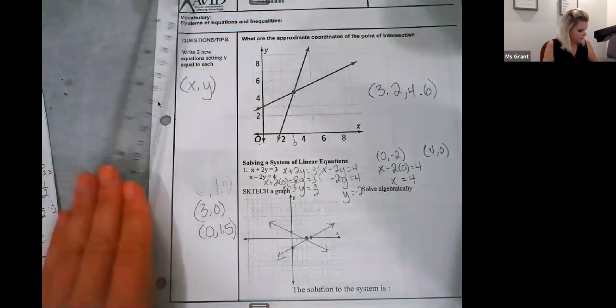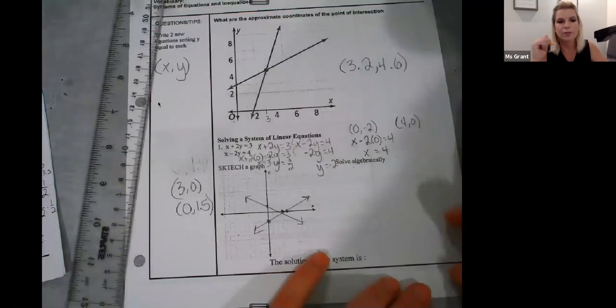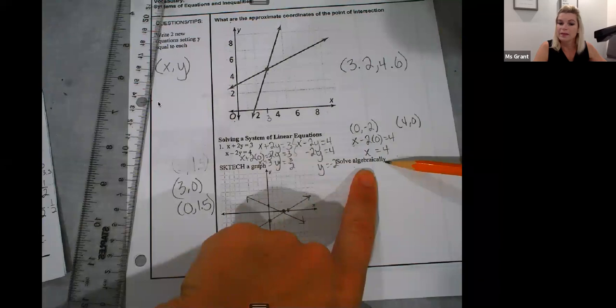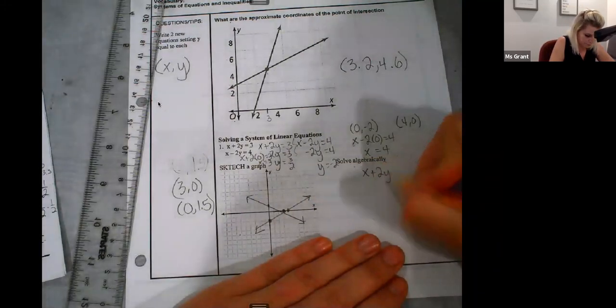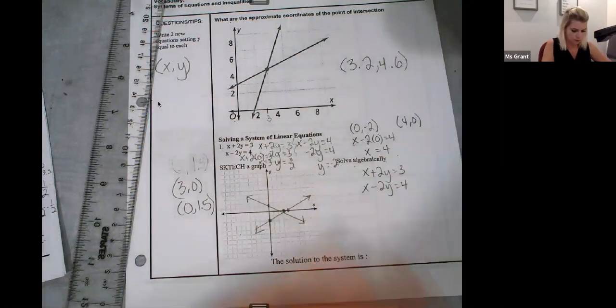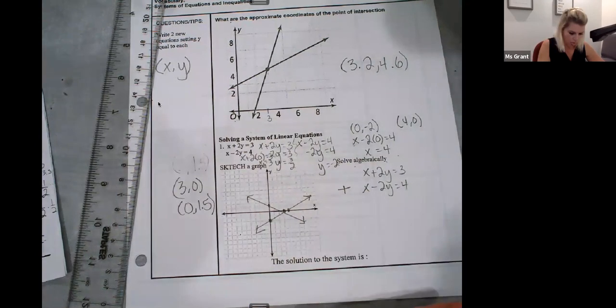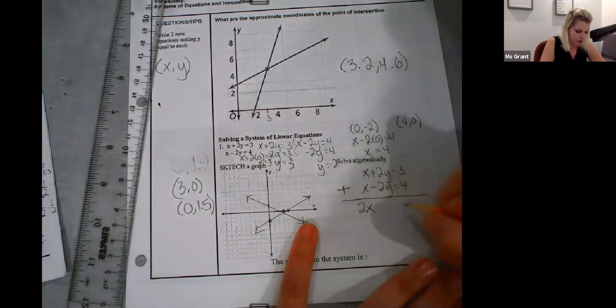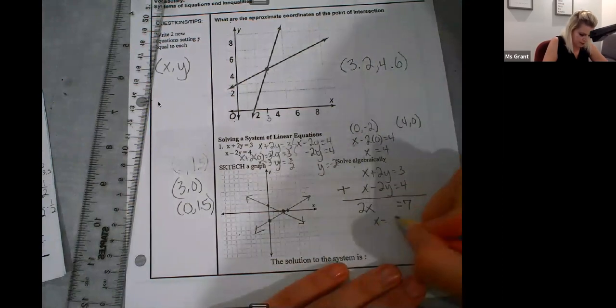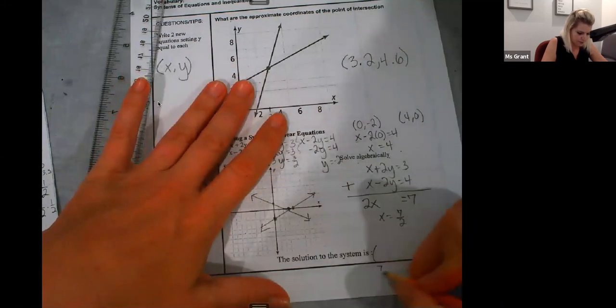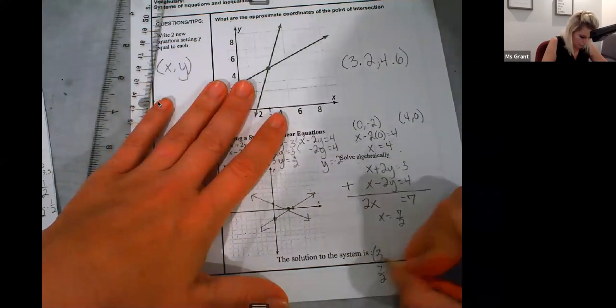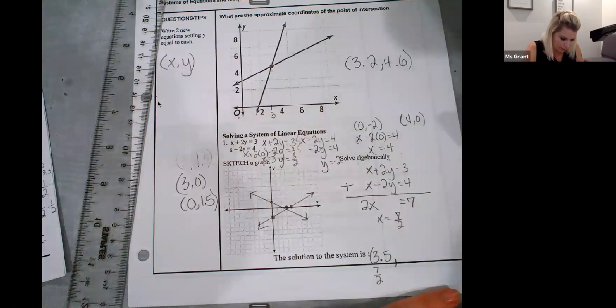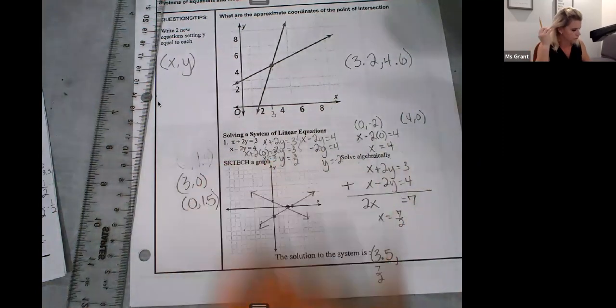So, this is graphing them. Solve algebraically. Solving algebraically with a system means that I'm going to... Probably elimination is the best way. So, line up the system. Since I noticed that my positive 2Y and my negative 2Y are going to cancel, I'm going to do...